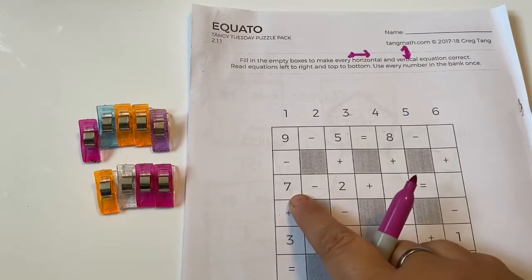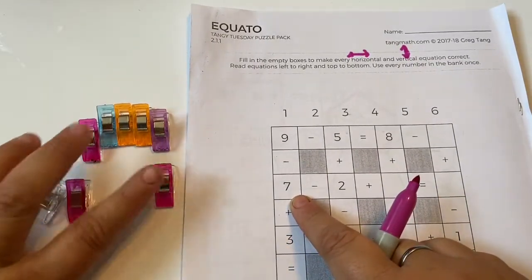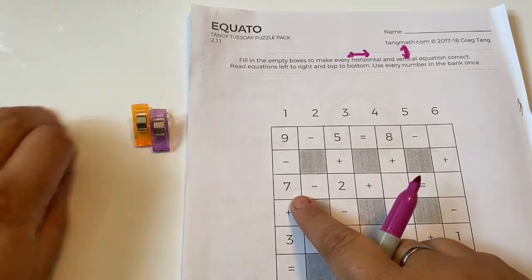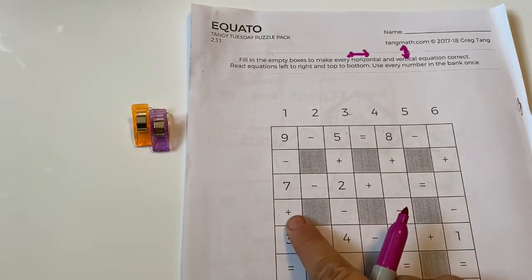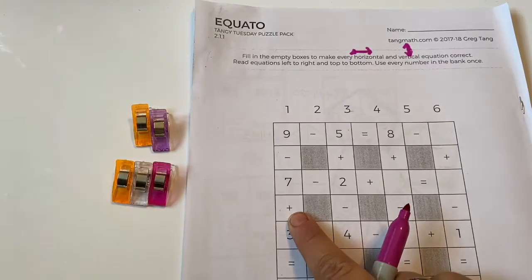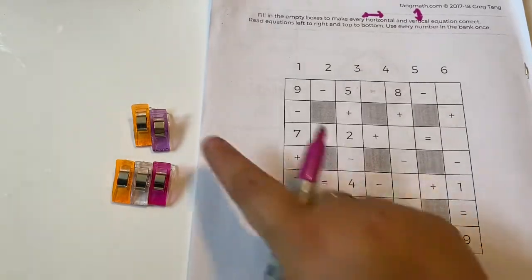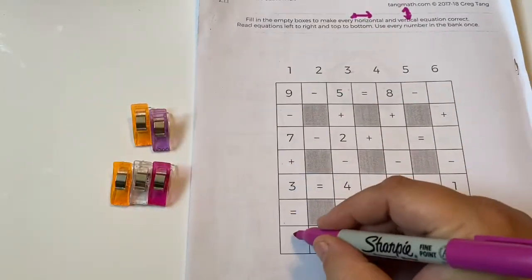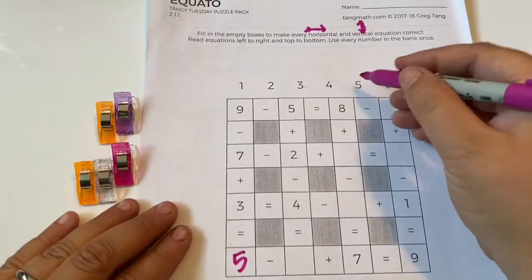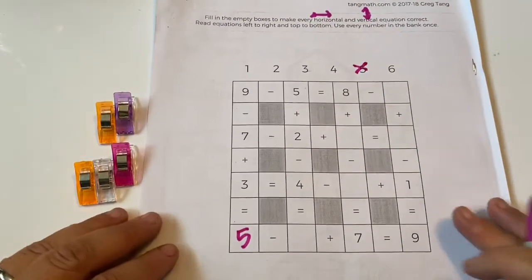Minus seven, so one, two, three, four, five, six, seven, plus three equals one, two, three, four, five. So I'm gonna write five here, and then I'm gonna cross five out because we've already used it one time.